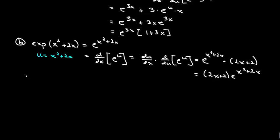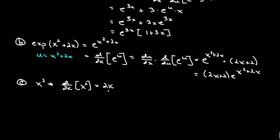Now let's go ahead and work part C. So C is just x squared. And of course d/dx of x squared — since this is not an exponential function, the variable is not up in the exponent — so we'll use the power rule here, and we'll just get 2x.